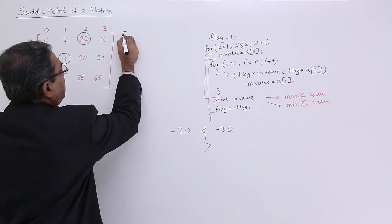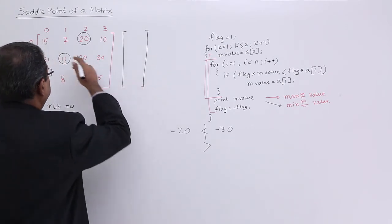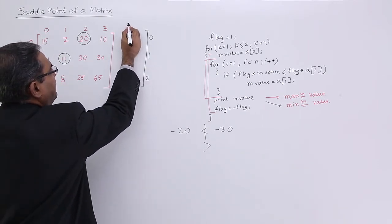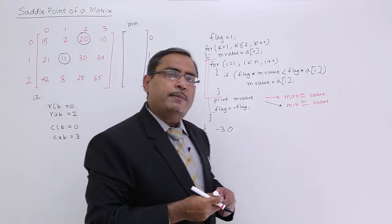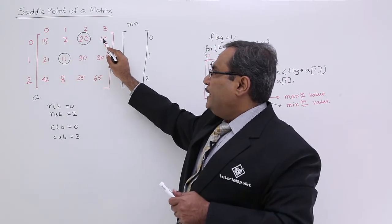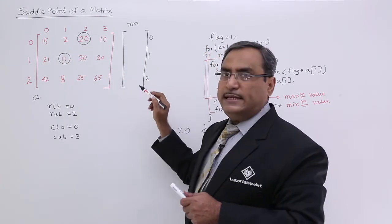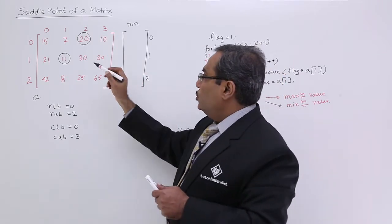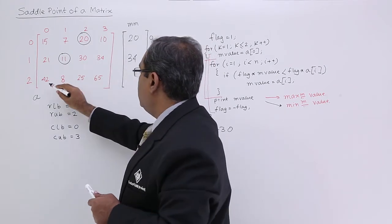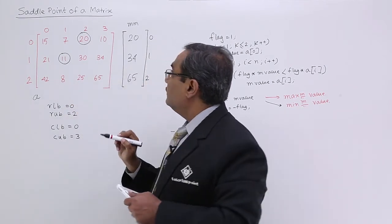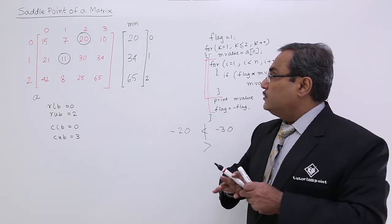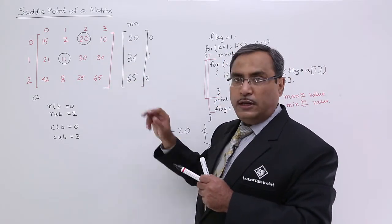I shall define a one-dimensional array of size equal to the number of rows in the matrix, named mm (max-min). First, I shall calculate the maximum of each row and store the value in this mm array at the r-th position. For example, the maximum of a row is 65, so that will be kept there. After placing row maxima in this array, we proceed to the next step.